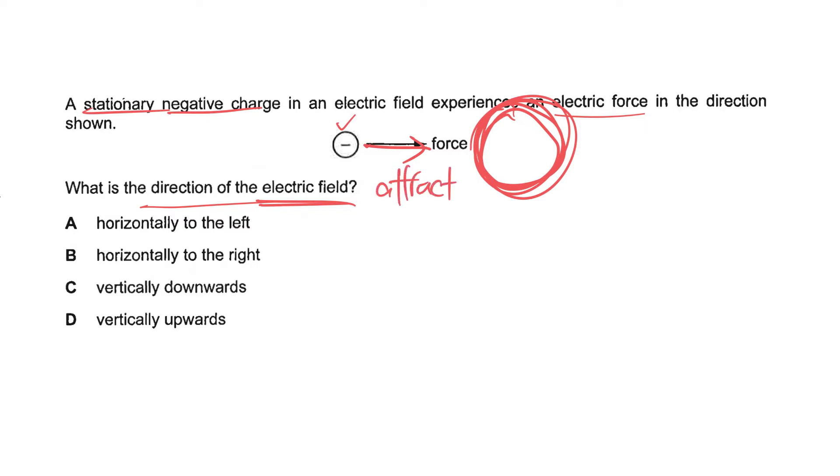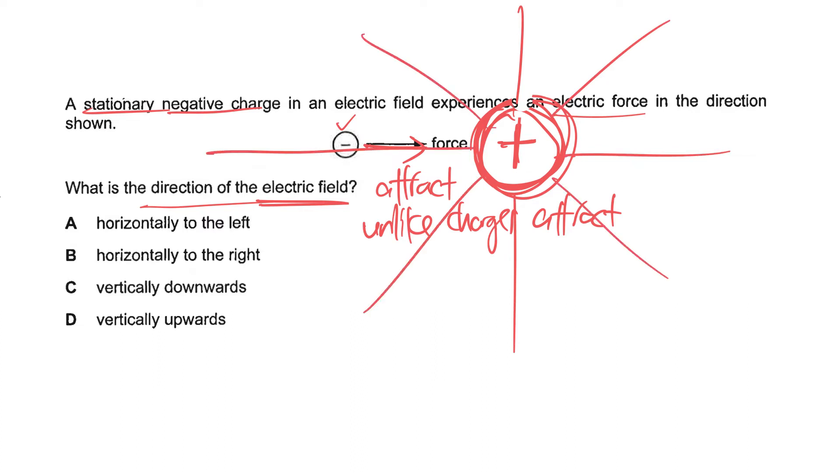And as you know, since unlike charges attract, that means to say this unknown charge here, this charge particle that creates the electric field must be positive. And if you understand that, you can actually draw out the electric field as per usual. And you know that the direction of the electric field lines is out, coming out from the positive charge.